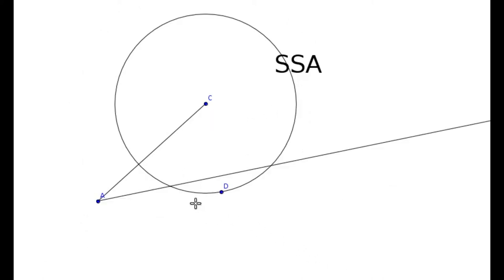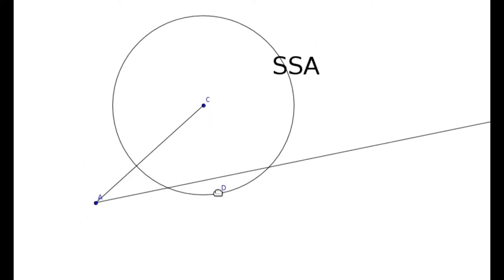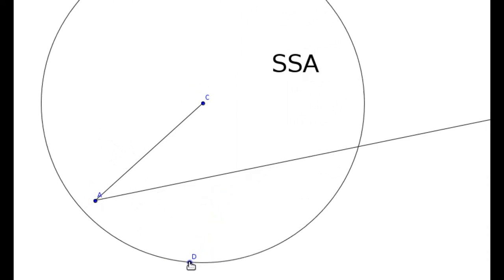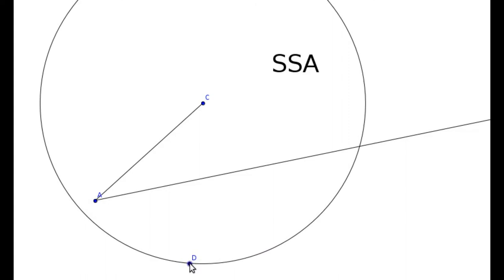And finally, if the length of this first side—if the radius of that circle is big enough—in fact, if it's bigger than this length AC, then there's going to be exactly one solution again.